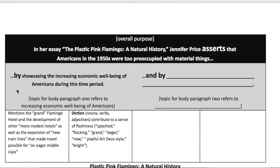This section talks about one of the purposes — she asserts that Americans were too preoccupied with material things by showcasing the increasing economic well-being of Americans during this time period. So the topic for your body paragraph one refers to increasing economic well-being of Americans. She mentions the Grand Flamingo Hotel and the development of other more modest hotels, as well as the expansion of new train lines that made travel possible for an eager middle class.